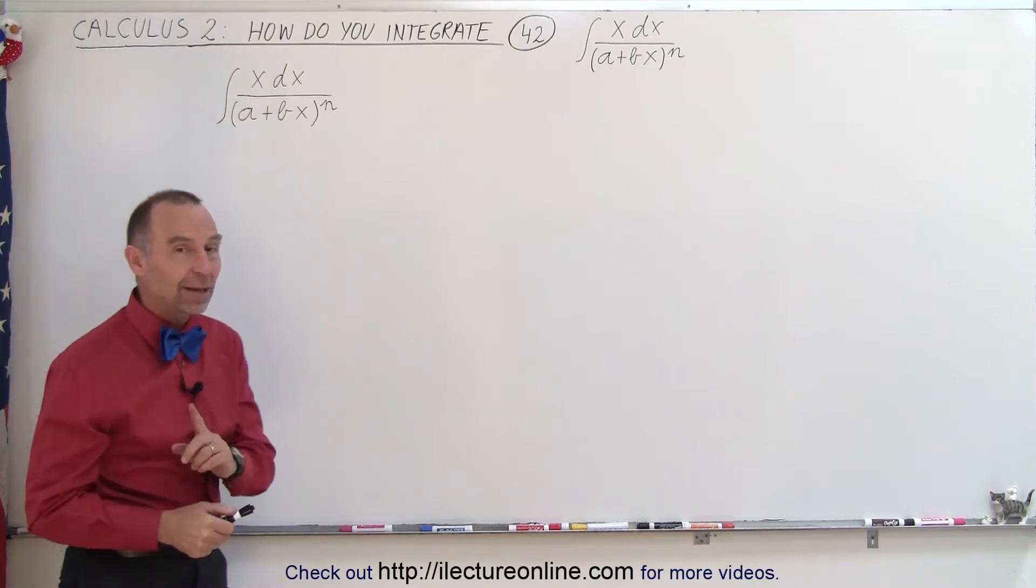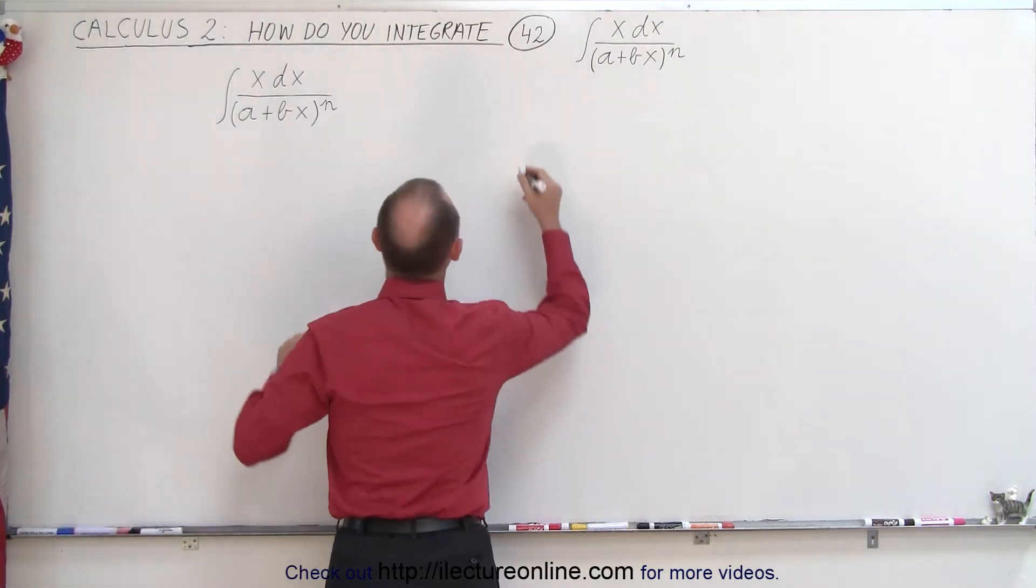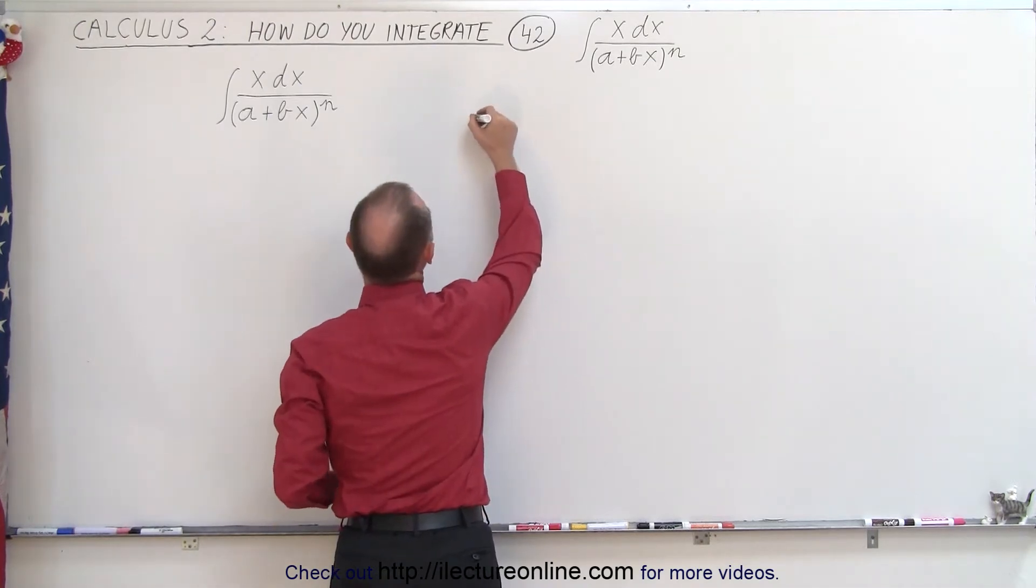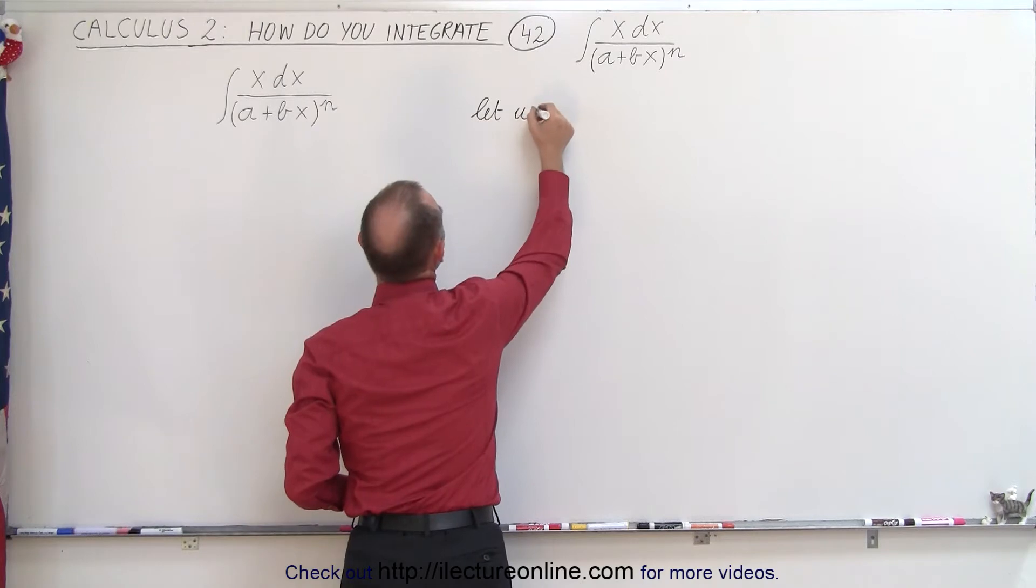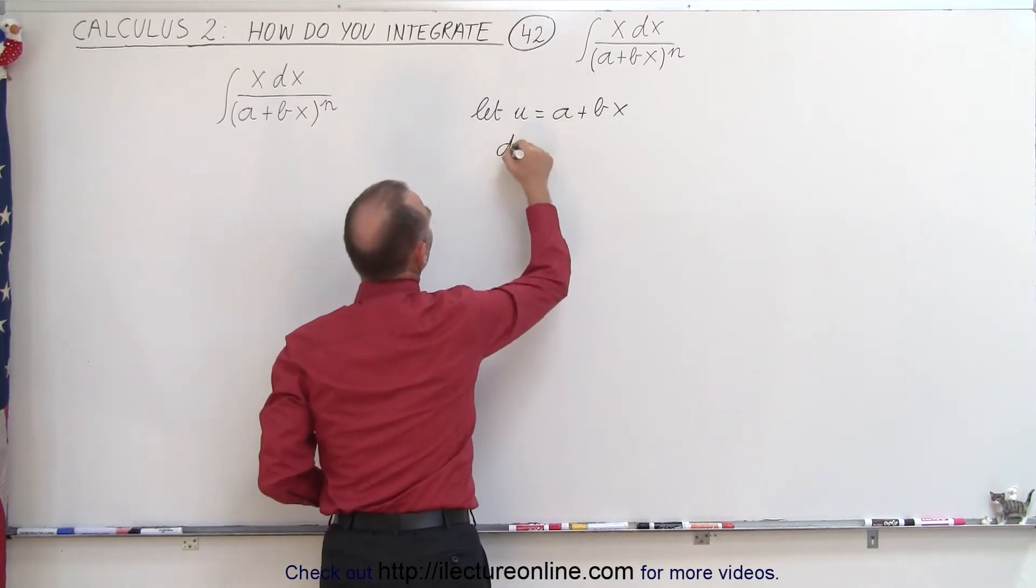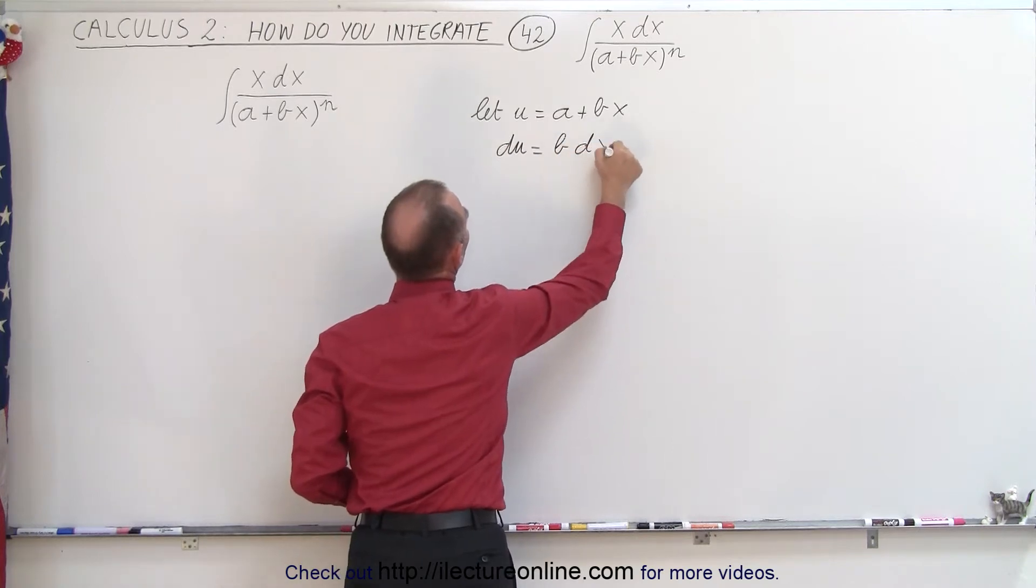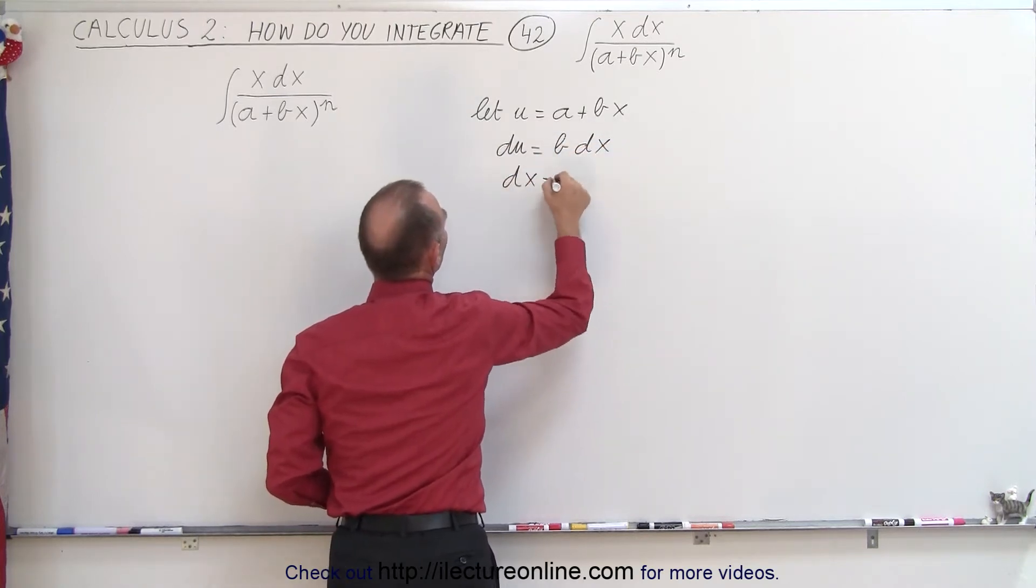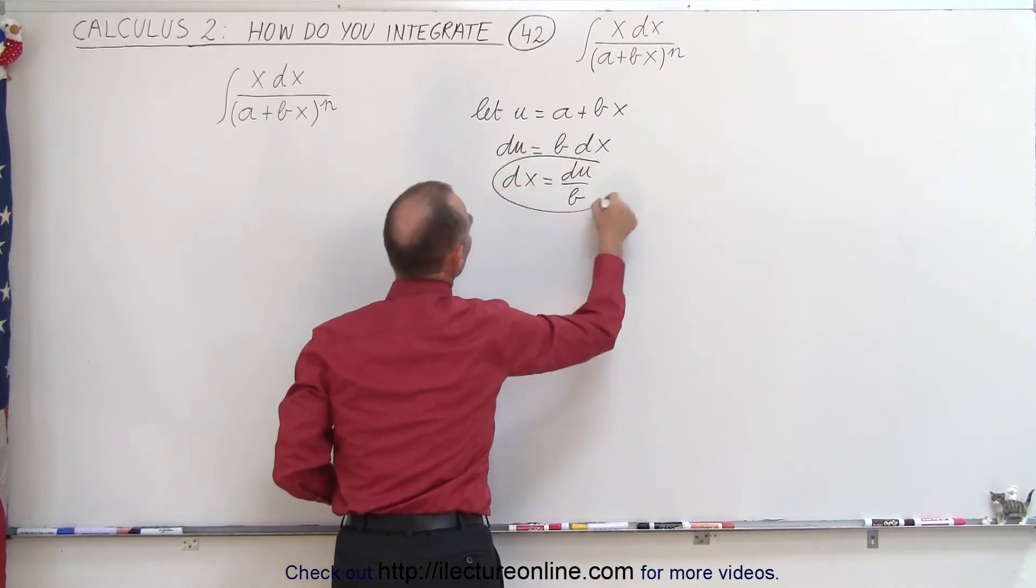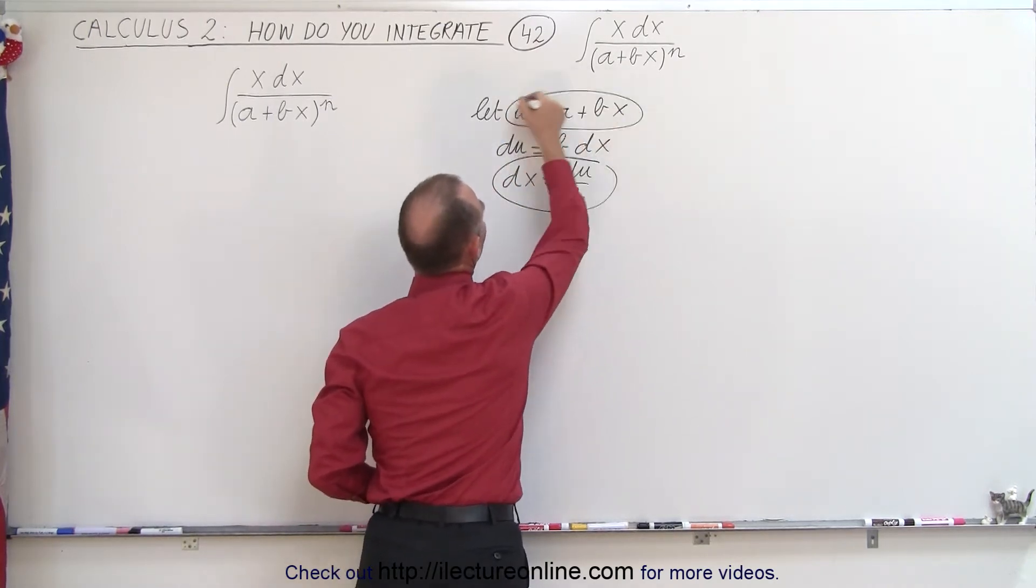We're going to use the same technique as before. We're going to let u equal what's in the denominator, or what's inside the parentheses in this case. So let u equal a plus bx. That means that du is equal to b dx and dx is equal to du divided by b. So we can substitute this and this back in our integral.